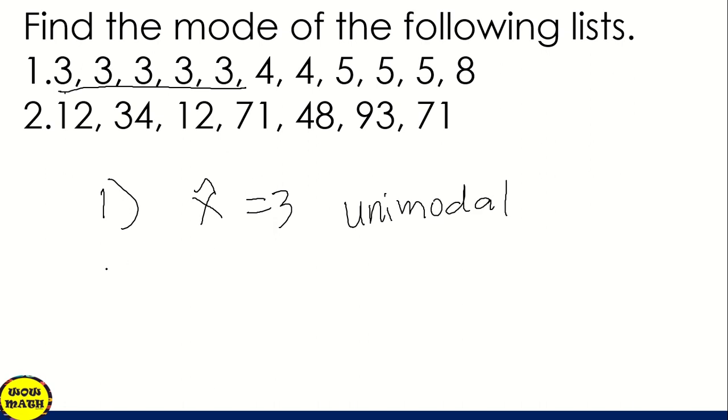And then for number 2, is there a mode in number 2? We have two 71s and two 12s. So that means we have two modes. We have 12 and 71. When we have two modes, we call it bimodal. So that is how to get the value of mean, median, and mode when the given is ungrouped data.